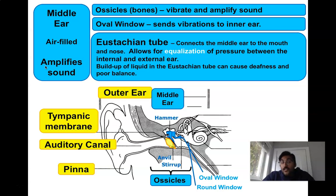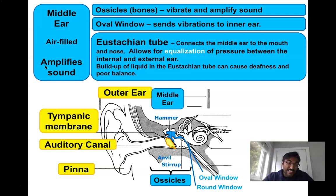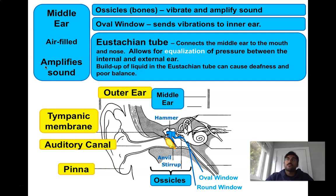There's something called the eustachian tube in the middle ear as well, and it's what connects the middle ear to the mouth and the nose. This allows for equalization of pressure between the internal and external ears. If you've ever driven on a highway or been in an airplane that went up really high and came down really low, and your ears were plugged and then they popped — that's the pressure trying to equalize in the eustachian tube.